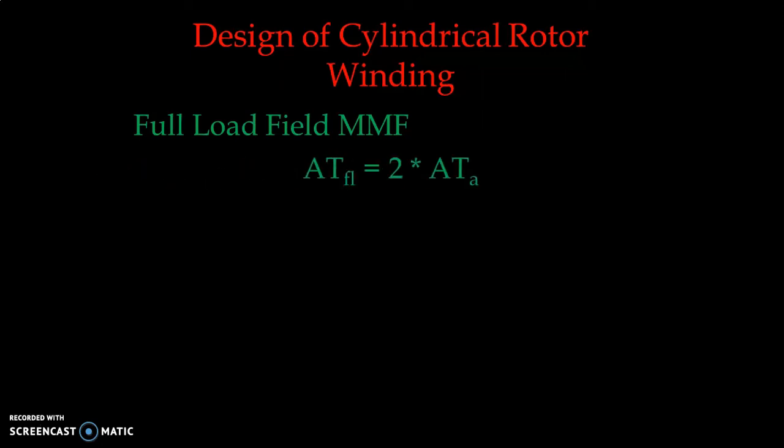We start with the full load field magnetomotive force. The first step in the rotor winding design is to find how much MMF this winding will generate. Based on the required flux and flux density, we design our ampere-turns, and from those we find the number of turns and field current. The full load field MMF — ATfl — is normally taken as two times the armature ampere-turns.